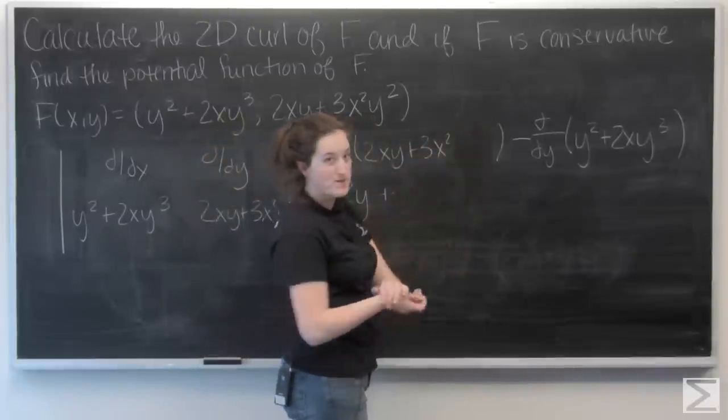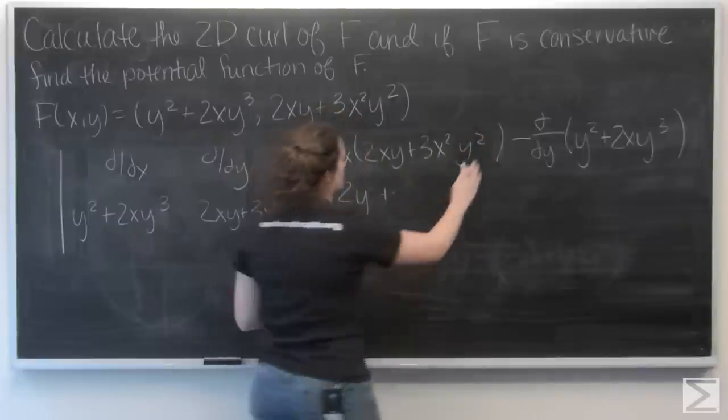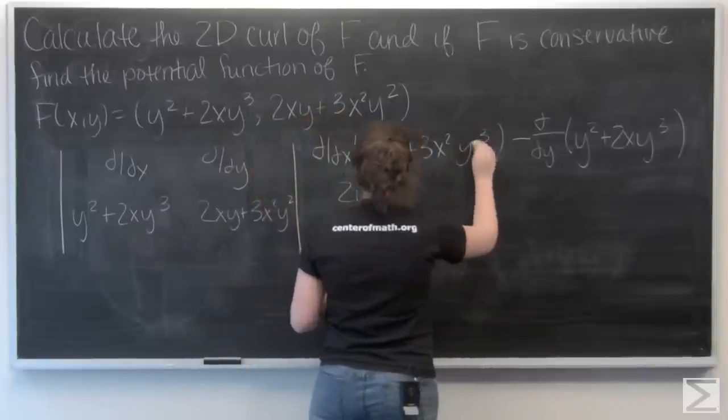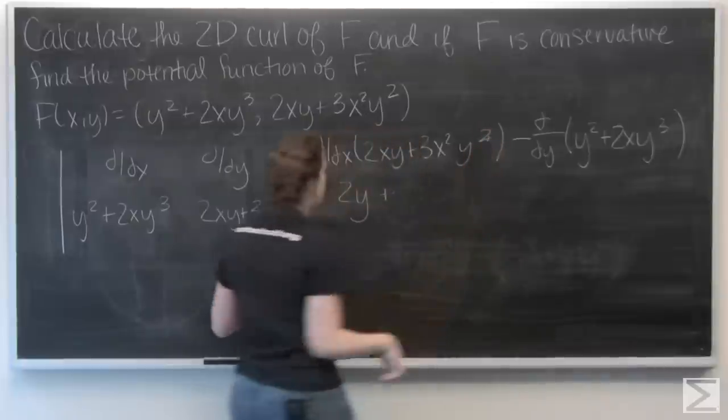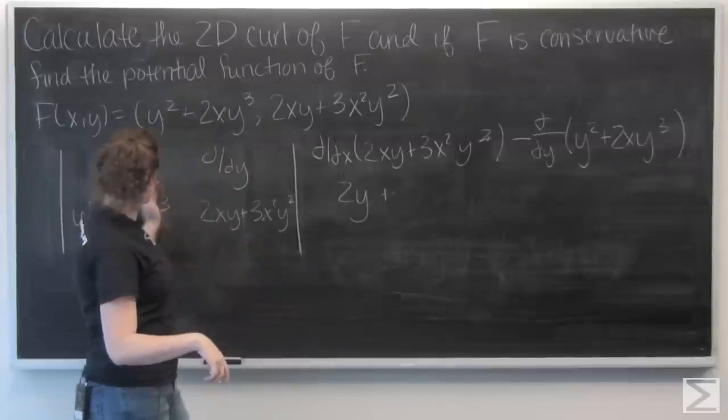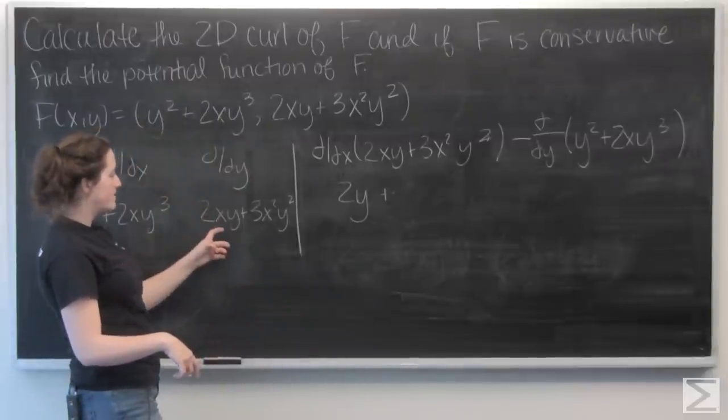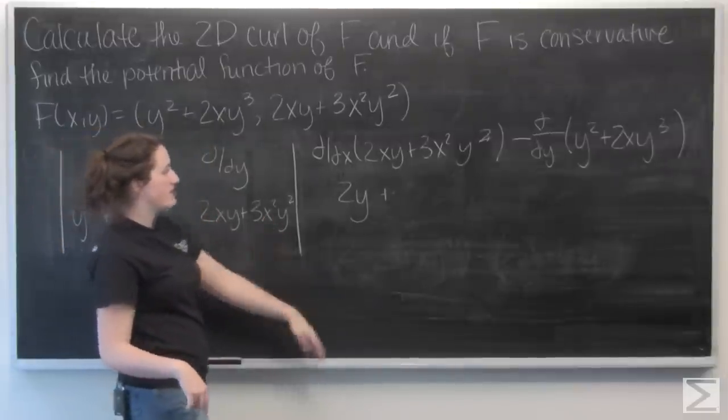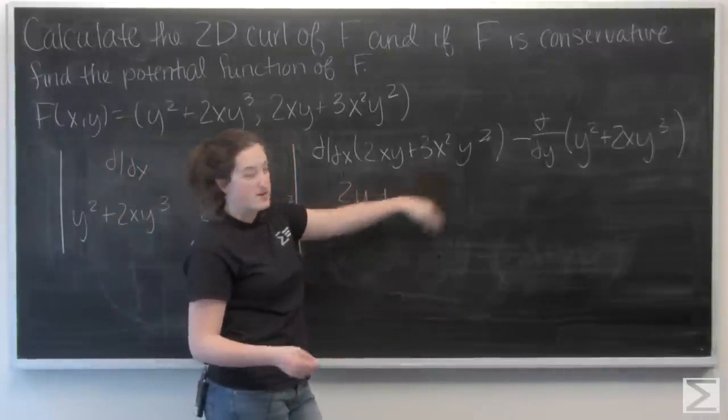That's a product. Technical difficulties. Okay, let's check this product to make sure it matches: d/dx of 2xy plus 3x squared y squared. Now I'm all set. And this partial derivative is going to be 6xy squared.